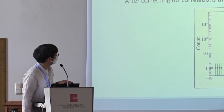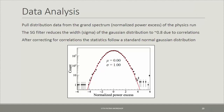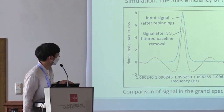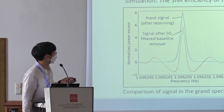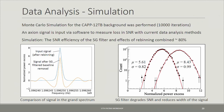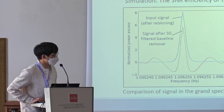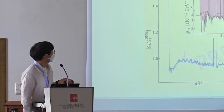Looking at the raw spectrum, we see spurious peaks that are filtered out; the filtered spectrum is used to find a good baseline using the Savitzky-Golay (SG) filter. The resulting noise temperature is obtained after removing all gain including the JPA and HEMT at 300 K. Data analysis shows the data follows a standard normal Gaussian distribution after accounting for correlations, well matched with simulation. However, the SG filter reduces signal power — combined with rebinning and other analysis steps, overall efficiency is around 80% signal loss. Work is ongoing to improve baseline estimation.